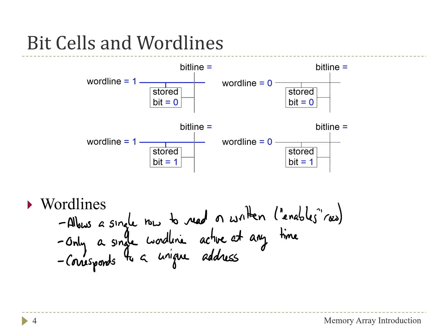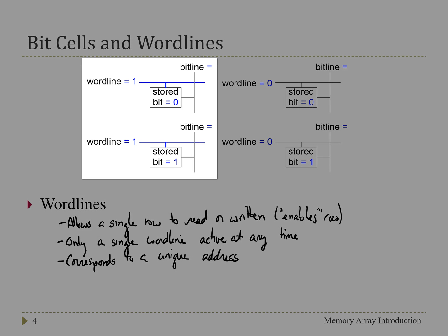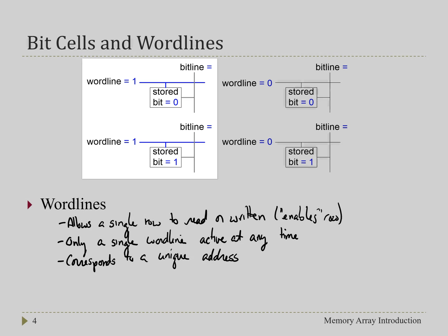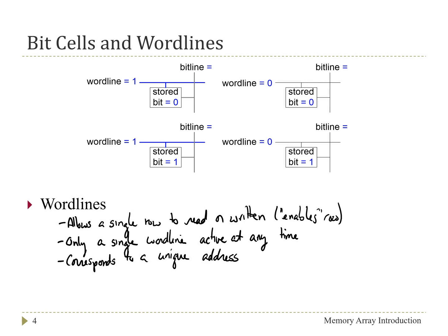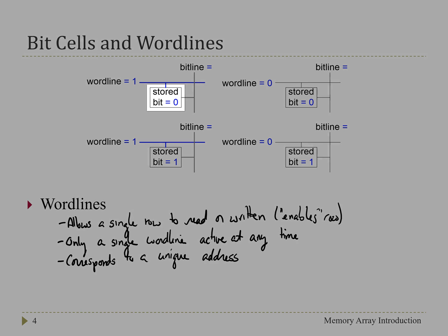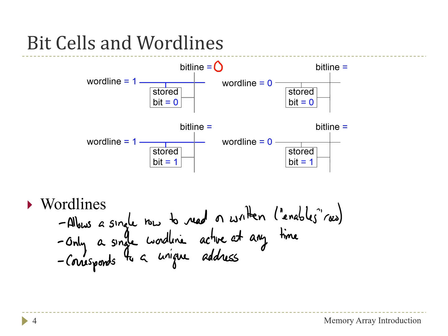And so as an example of how the word line affects accessing the particular stored bits, if we look at the left here where we have the word line as one, meaning that we've activated a particular row of the memory array. Then when that's one, we look at what is in the stored bit cell and that's what appears on the bit line. So in this top case, since the stored bit is zero, the bit line is going to output a or going to contain a zero. And in the second case, the stored bit is one. So the bit line is going to contain a one.